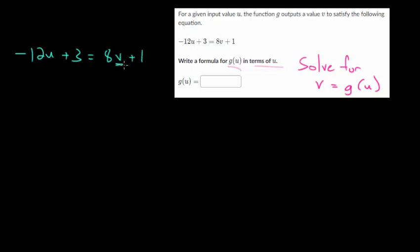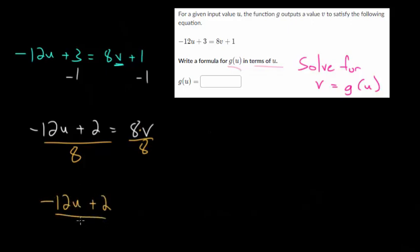Let's rewrite it: -12u + 3 = 8v + 1. We're going to solve for v. Let's get v on one side by itself. We have to get rid of this -1, so we will subtract 1 on each side. We have -12u + 2 = 8v. Lastly, we want to get rid of this multiplication, so we will use division. We get (-12u + 2)/8 = v.